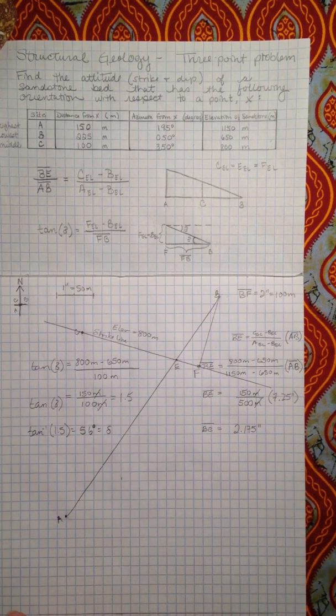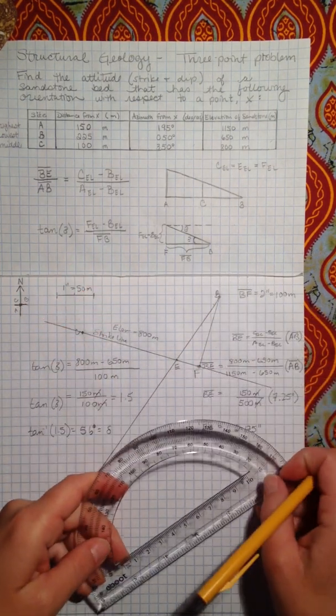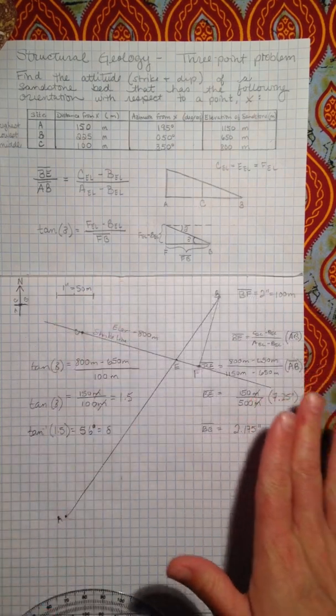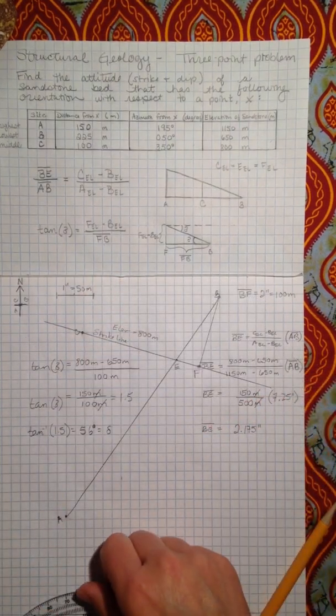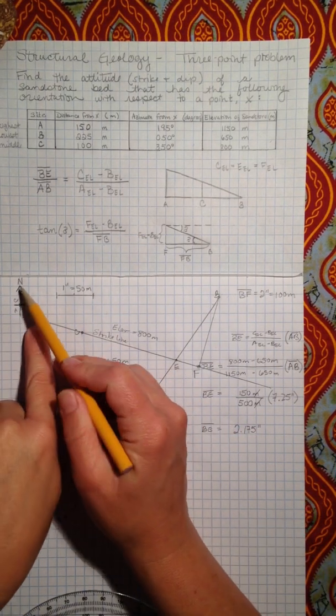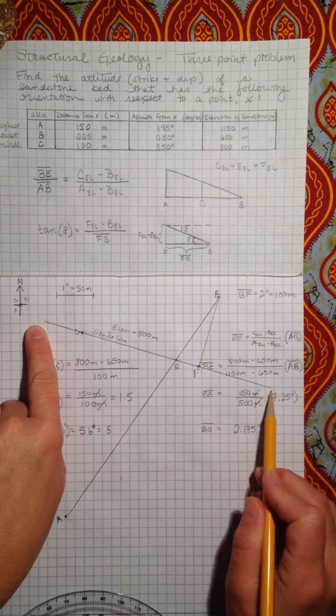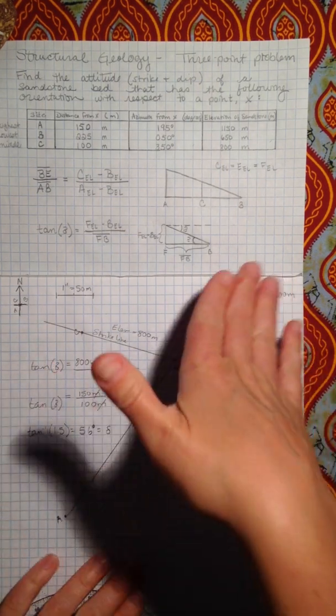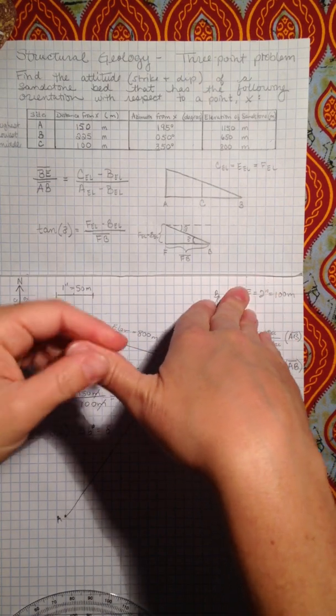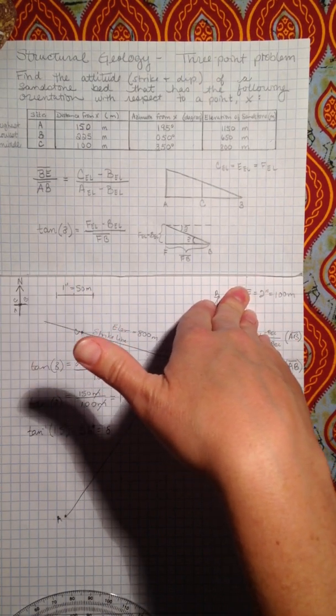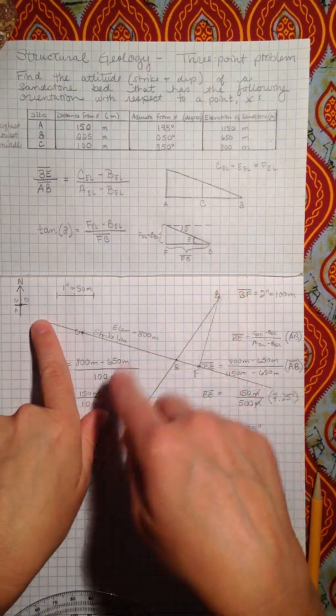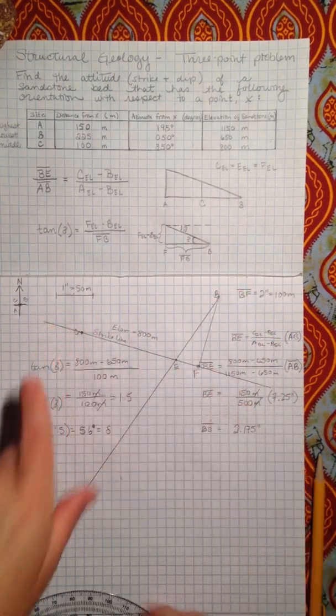And so I'll use my protractor here to know that. So what we need to do is use the right hand rule, because we have two strike directions, right? This could be, it can be striking over here to the northwest or down here to the southeast. And so we use the right hand rule. We put our hand on the plane as it's dipping and our thumb points in the direction of the number that we want to use of the strike that we want to use. So we want to use this northwest strike direction.